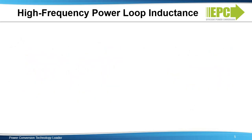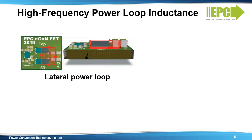There are two conventional power loop designs commonly used. The lateral layout places the input capacitors and devices on the same side of the PC board in close proximity in order to minimize the area of the high-frequency power loop.